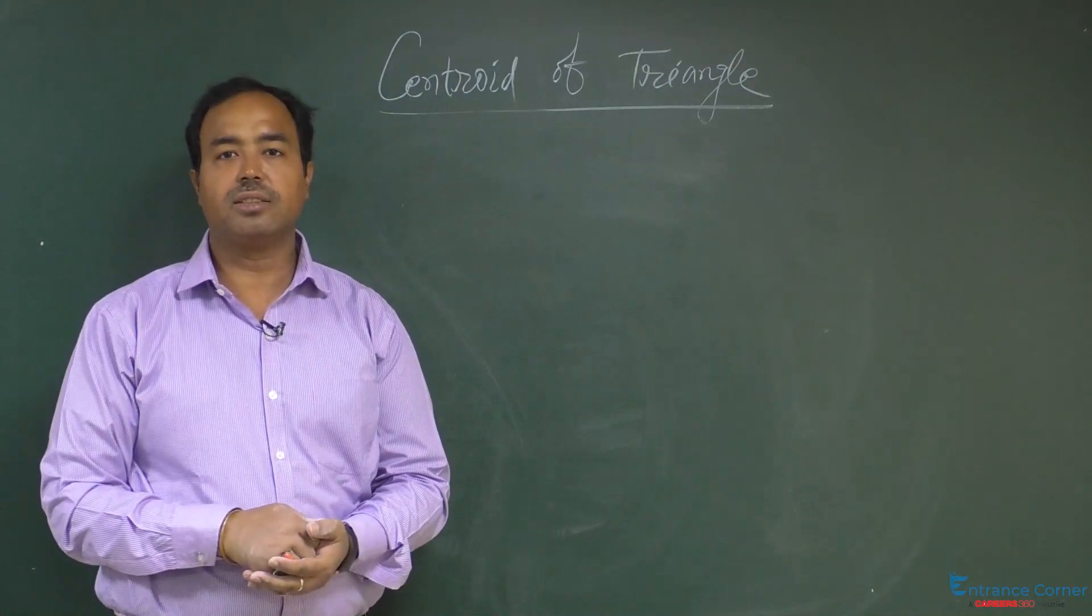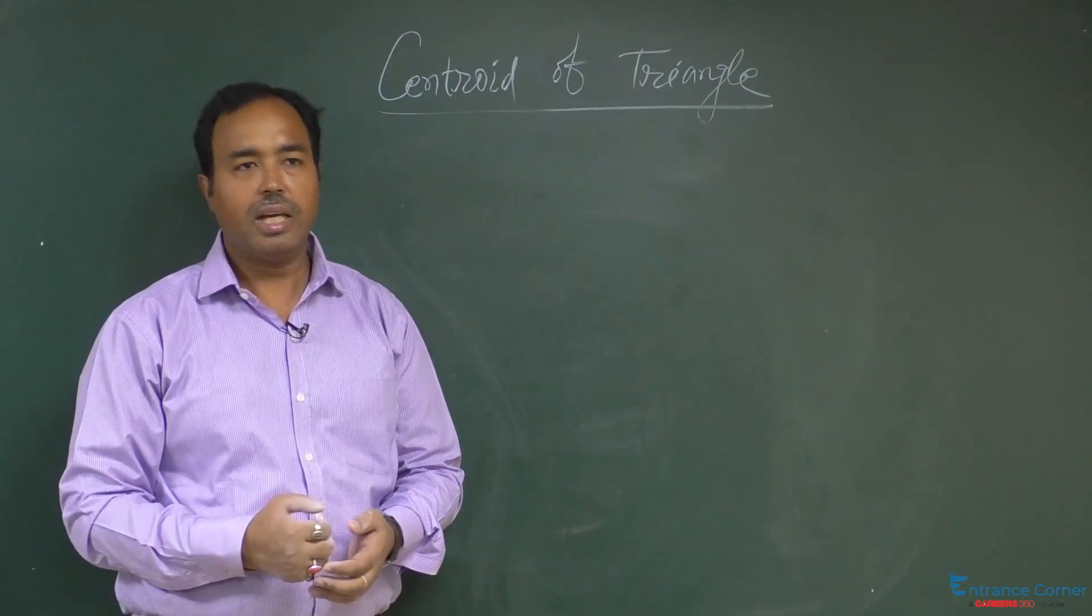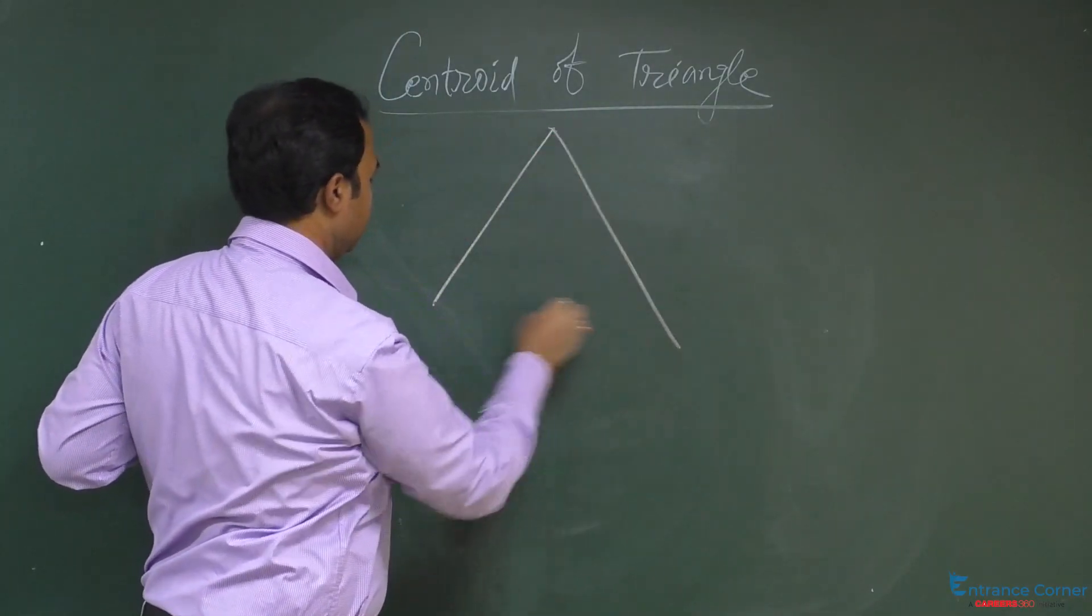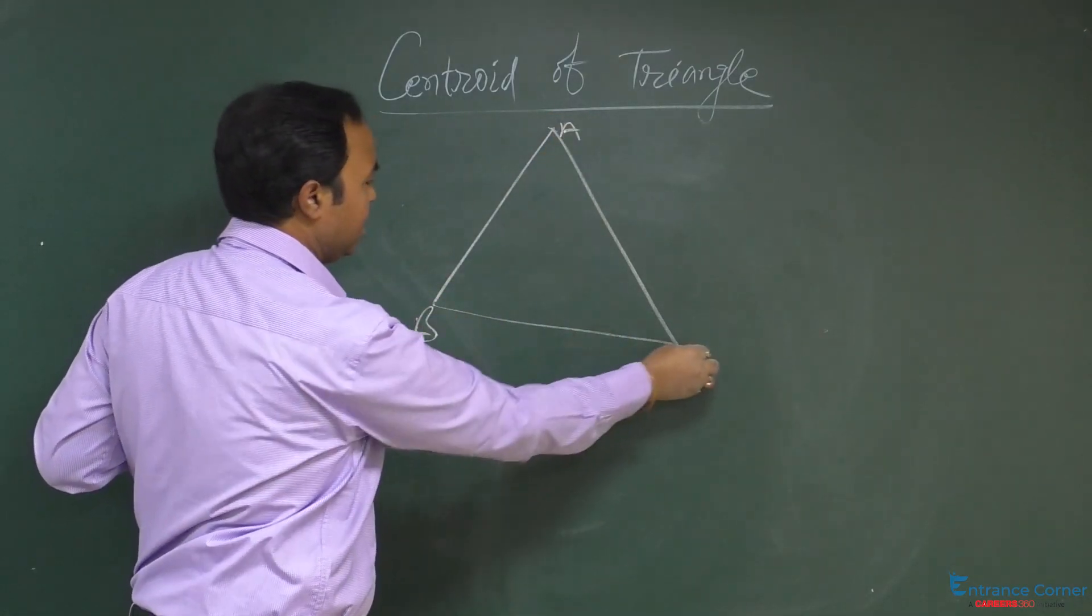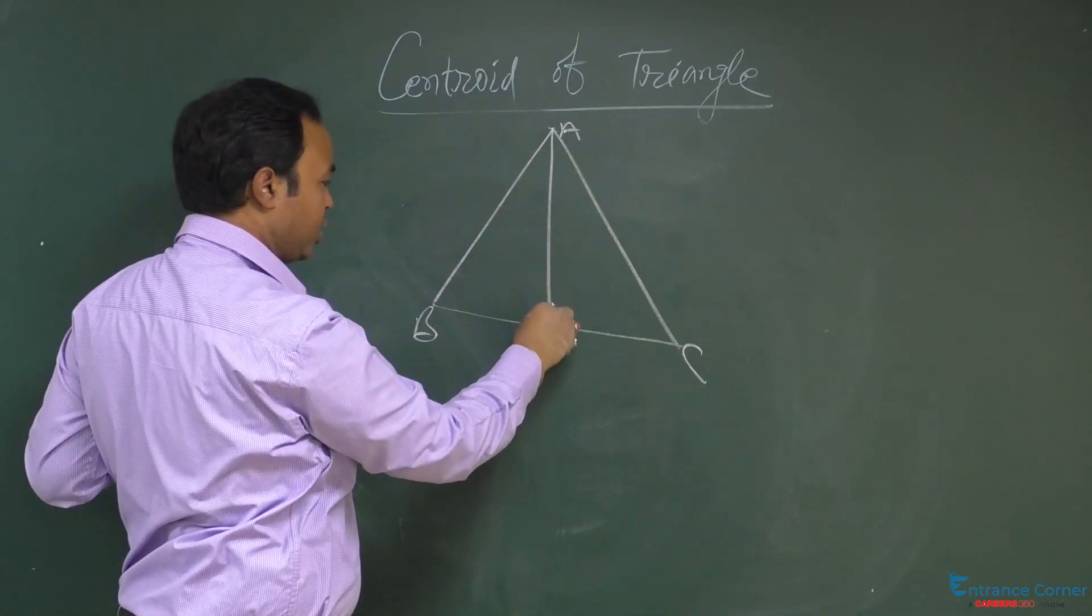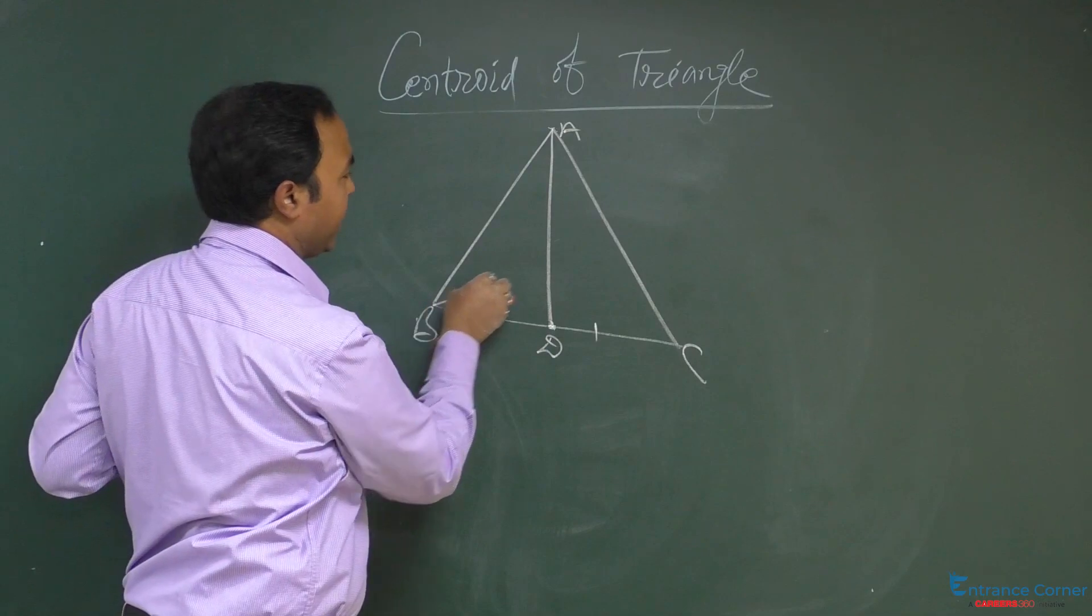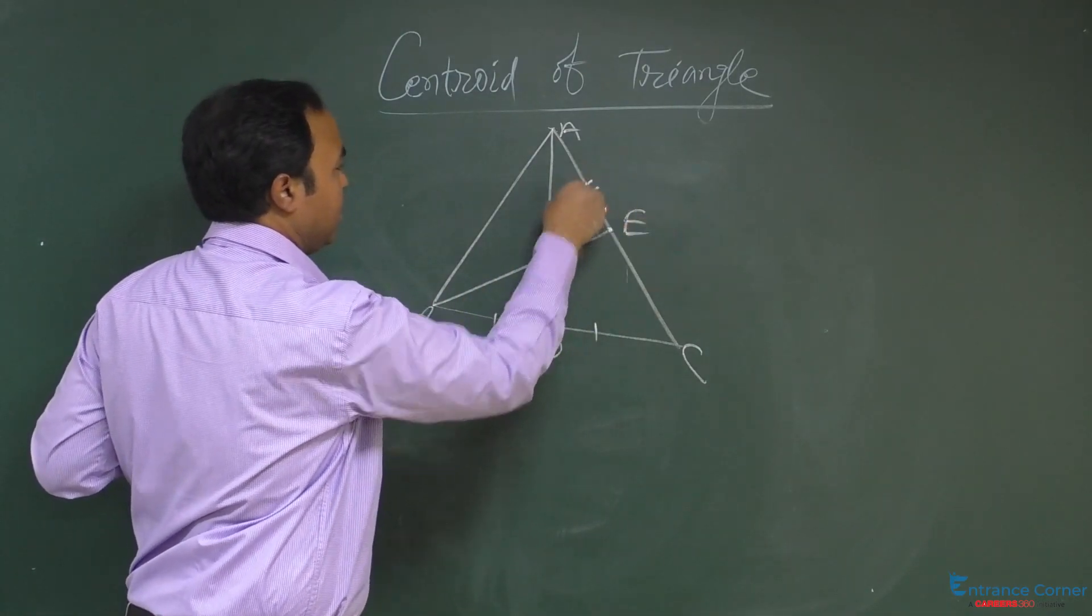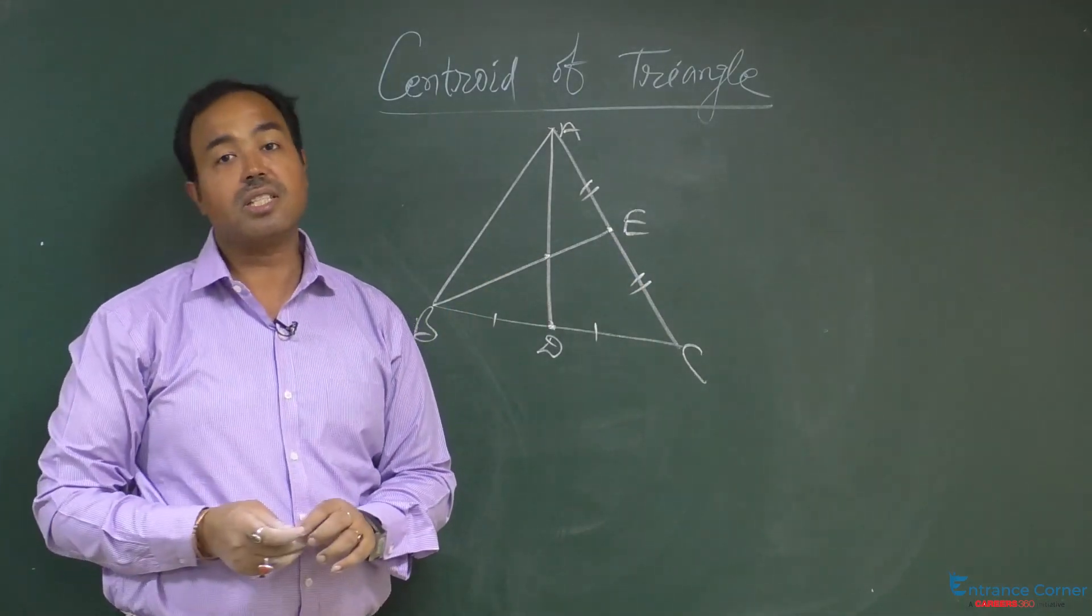Centroid of a triangle. Student, you know the centroid is, if this is the triangle ABC, then point of intersection of medians, this point of intersection is called centroid.